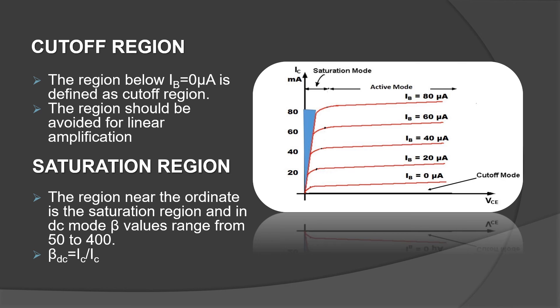The next region is saturation region. The region you can see in the graph, shaded there, near the ordinate is the saturation region. And the beta value ranges from 50 to 400.